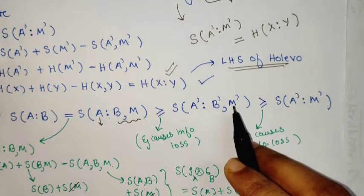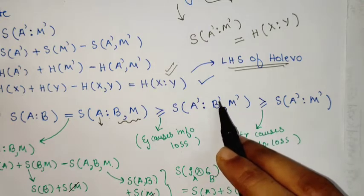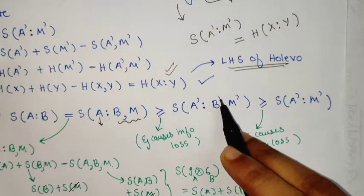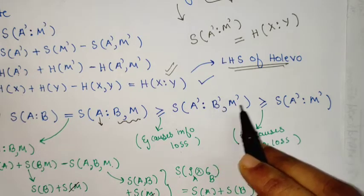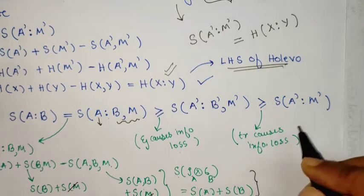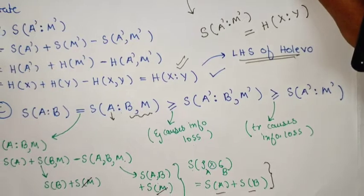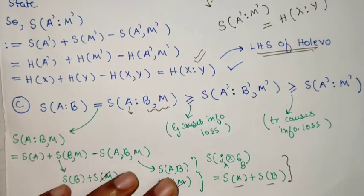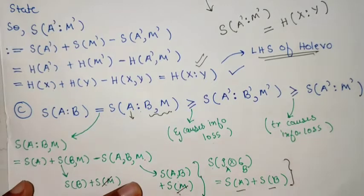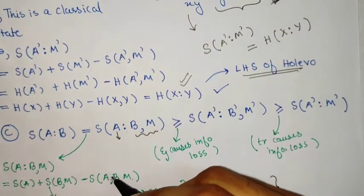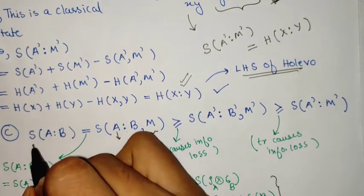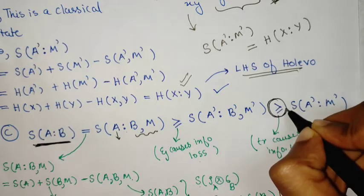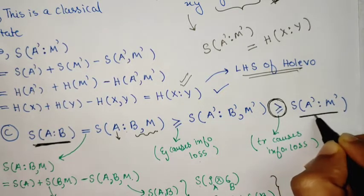At the end, Bob simply traces out B — his own apparatus — and from this step there is again an inequality because tracing causes loss of information. This means we have the inequality: the mutual information between A and B is greater than or equal to the mutual information between A and the apparatus M.